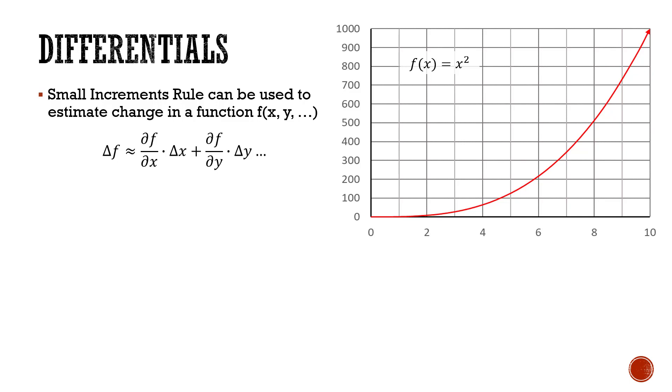So if we had a function like we do on the right, f of x is equal to x squared, we could estimate the change that we would get at x is equal to 6 to x is equal to 8. It would involve taking the slope at x is equal to 6, calculating that first derivative, calculating that slope at that point, and then we would multiply it by the change in x and we would get the change in f.